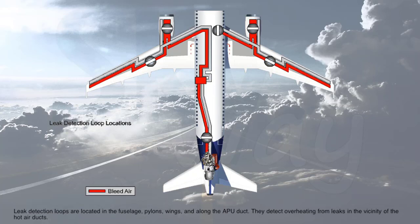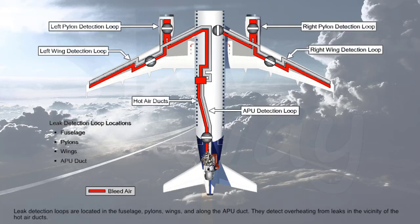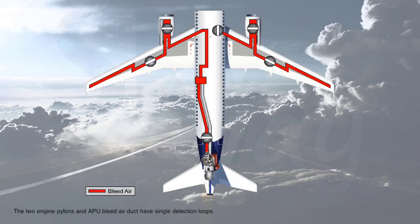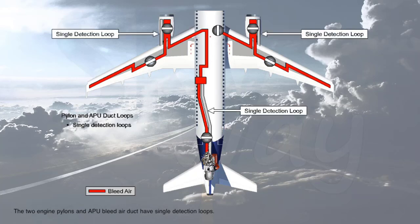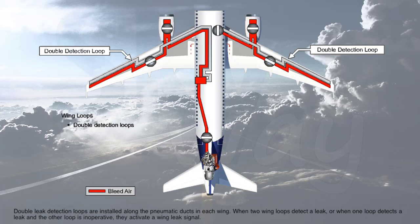The leak detection loops are located in the fuselage, pylons, wings, and along the APU duct. They detect overheating from leaks in the vicinity of the hot air ducts. The two engine pylons and APU bleed air duct have single detection loops. Double leak detection loops are installed along the pneumatic ducts in each wing. When two wing loops detect a leak, or when one loop detects a leak and the other loop is inoperative, they activate a wing leak signal.